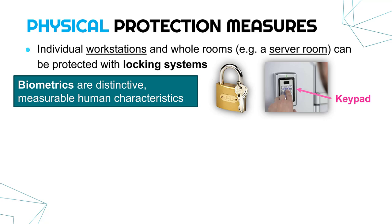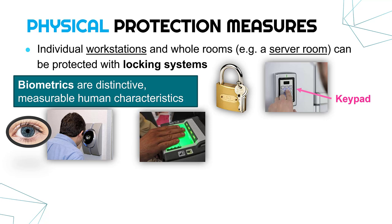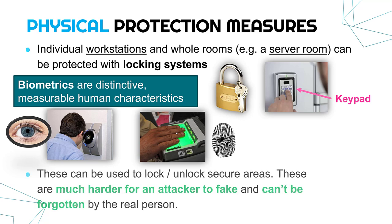A slightly more secure method is to use biometrics. Biometrics are distinctive, measurable human characteristics. A key and a PIN are not related to humans, but biometrics are. For example, in a really high-security area you might have an iris scanner, which scans the colored part of your eye — the iris — and that's unique, so it allows access based on that. Other ones you'd have come across are fingerprint scanners. Our fingerprints are unique, so they can be used to identify us. These are biometrics because they're part of our human characteristics.